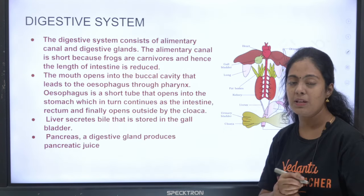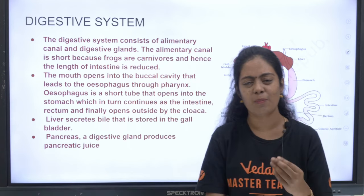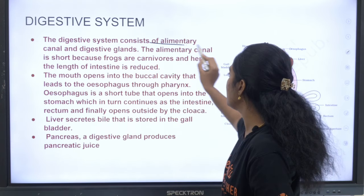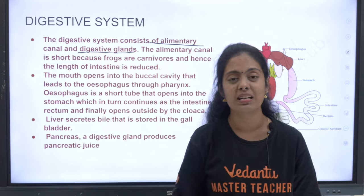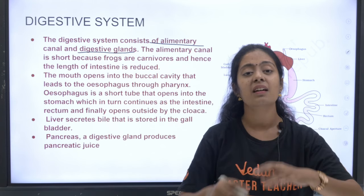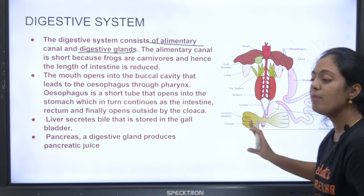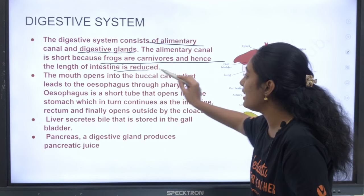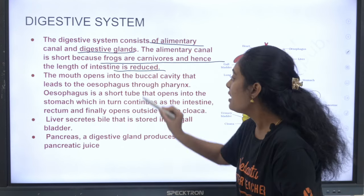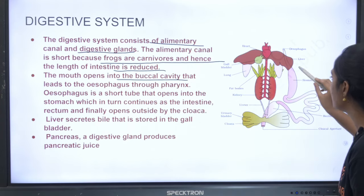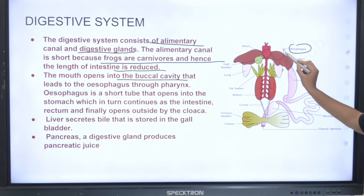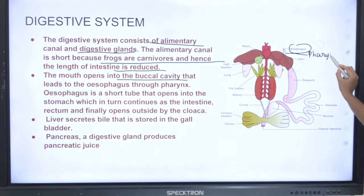Now the digestive system. The digestive system consists of the alimentary canal and the digestive glands. The alimentary canal is short because frogs are carnivores, so the length of the intestine is reduced. The mouth opens into the buccal cavity, which opens into the esophagus, then into a short pharynx, and the pharynx leads into the stomach.